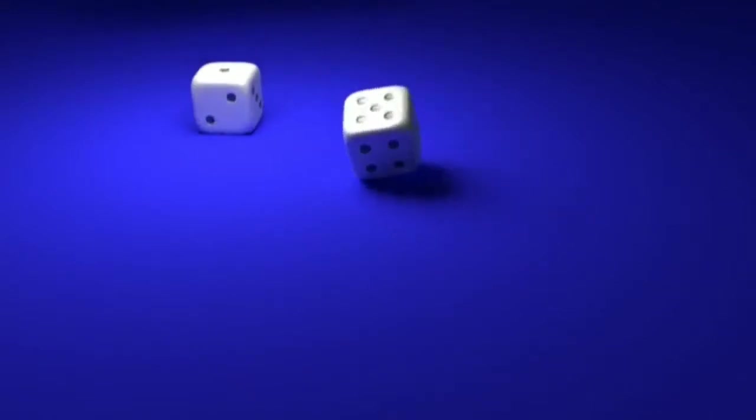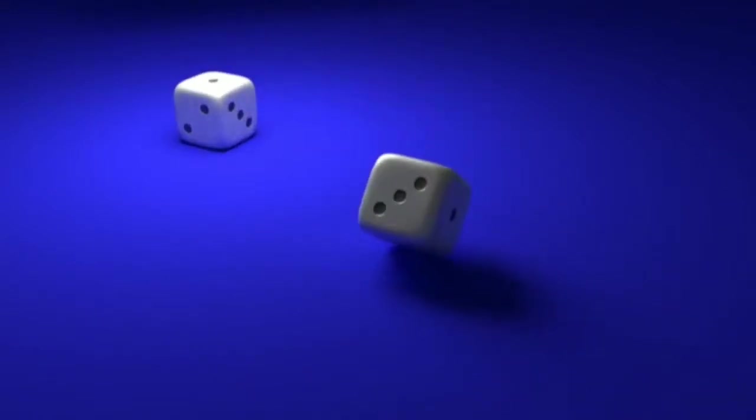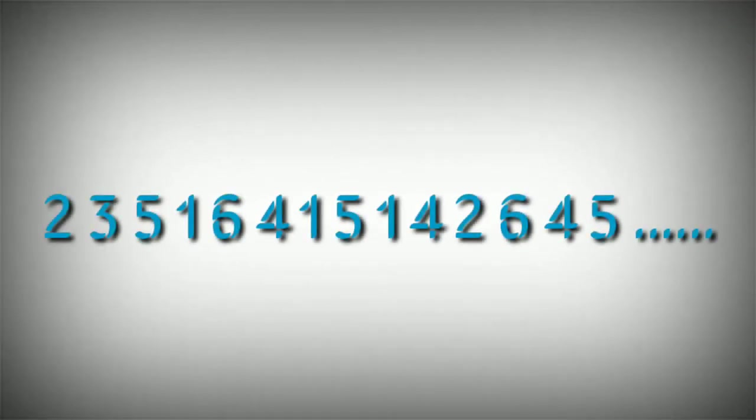Suppose you throw a dice with numbers 1 to 6 written on it. The outcome you'll get is completely unpredictable. If you note the outcome every time you throw the dice, that series will be a random series and those numbers would be random numbers.